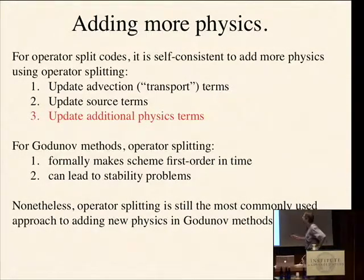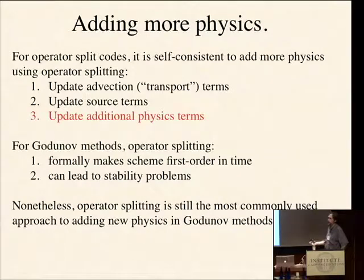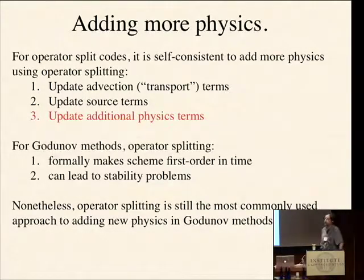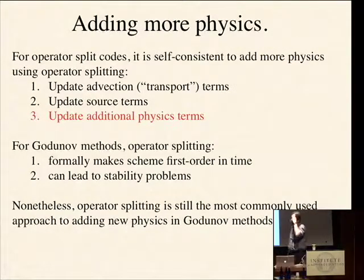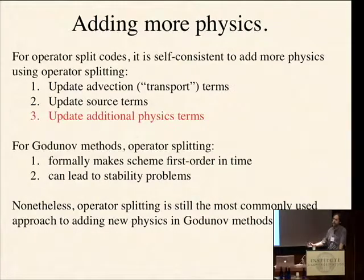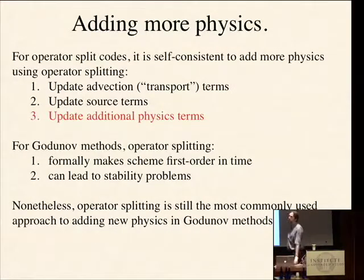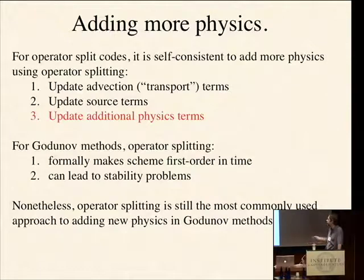For Godunov methods, operator splitting formally makes the scheme first-order in time because you're splitting some terms off from others and not updating all at the same time. Moreover, it can lead to stability problems, especially for problems where there's supposed to be a balance between flux gradients and source terms. A good example is a hydrostatic atmosphere where the pressure gradient is balanced by gravity. In a Godunov method, the pressure gradient term is added through the Riemann solver, whereas self-gravity would be added as a separate step with operator splitting — there's no guarantee they exactly balance.